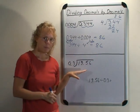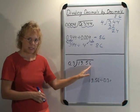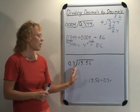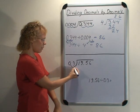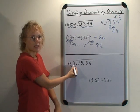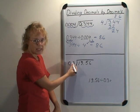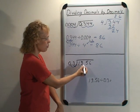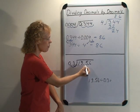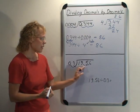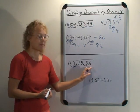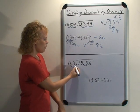Here's another example. 19.56 divided by 0.3. We need to move the decimal point here just one step, so we get 3. That means we are multiplying this number by 10. And here we move the decimal point from here to here. It means this number by 10.